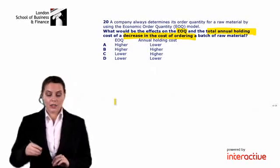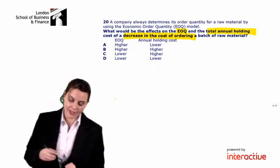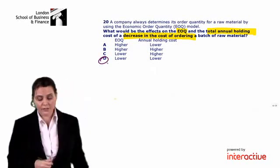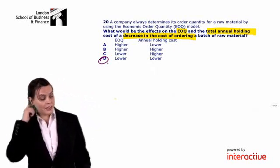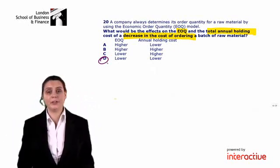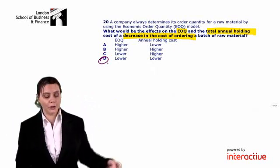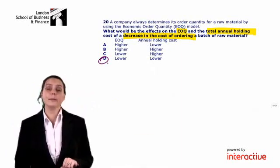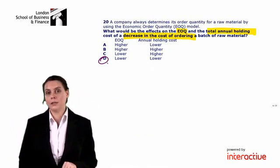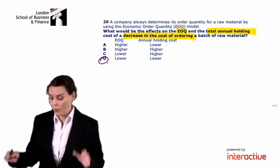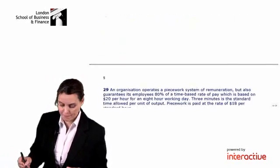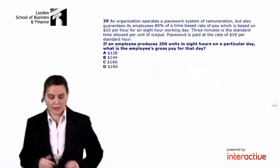Looking at our multiple-choice options, the correct answer is D. If there is a decrease in the cost of ordering, both the EOQ and our annual holding costs will be lower. Now, looking at a question on our labor costs.